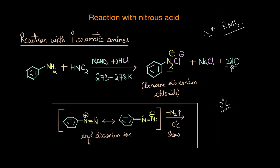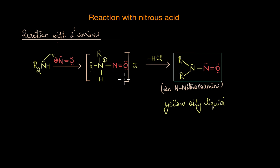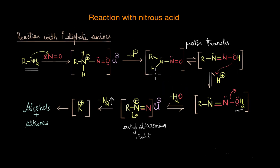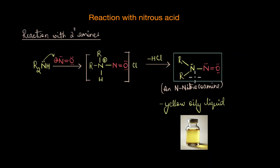Secondary amines react with nitrous acid to form N-nitroso amines, which are yellow oily liquids or solids depending on the specific amine. The reaction stops at the N-nitroso amine stage because, unlike in primary amines where a proton transfer from nitrogen to oxygen occurs leading to diazonium salt formation, secondary amines do not have a proton available for this transfer. This yellow oily liquid confirms the presence of secondary amines and is distinct from the effervescence seen with primary aliphatic amines or the diazonium salt formed with primary aromatic amines.